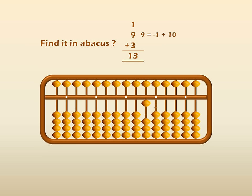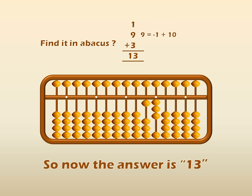And now again, we have to add 3 to get 13. So, in the 1's place, move 3 beads up. And then it will become 13. Because in the 1's place, there are 3 beads up to the answering bar. And in the 10's place, 1 bead up to the answering bar. So, 10 plus 3, we get 13. So, the answer is 13. In this way, we have to find out the answers with the abacus.